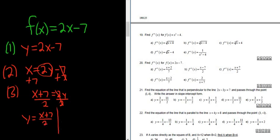And if you really want to be perfect you can include a fourth step. Replace y with the inverse function notation. So f inverse of x is equal to x plus 7 divided by 2. And that is the final answer.